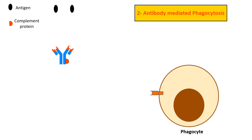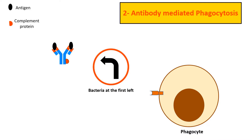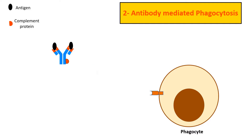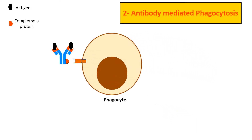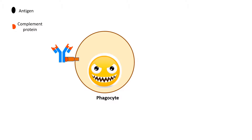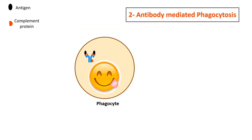Secondly, antibody-mediated phagocytosis. The binding of antigens to the antibody activates the complement system linked to the antibodies. The complement system in turn works as a navigator for the phagocytic cells to the site of the antigen-antibody complex. Complement proteins activate the phagocytes, which become eager to engulf the antigen-antibody complex and remove them from the blood.